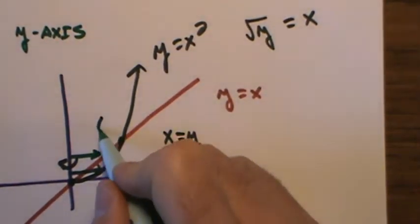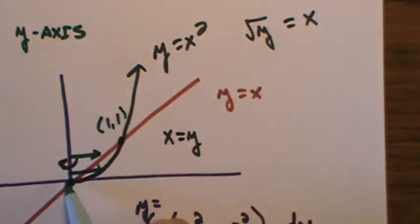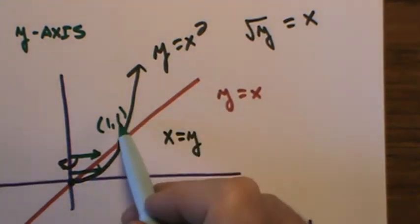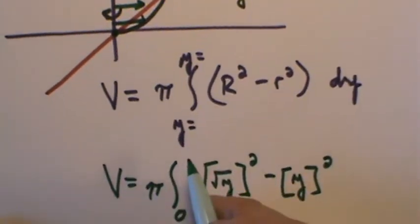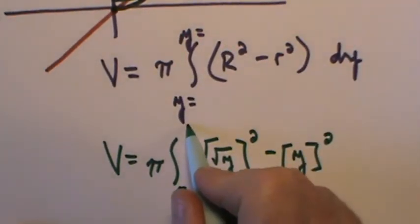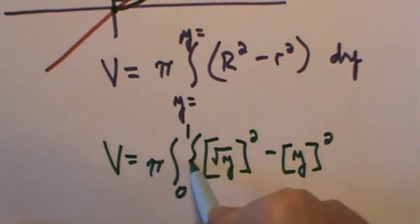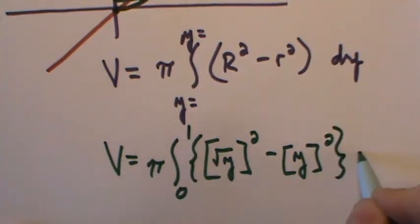Those would be equal at one. This point here happens to be one, one, and this point here happens to be zero, zero. But I'm looking at the y values when I set up my boundaries. So I'm going to go from zero to one. And then we've got our big old dy there.